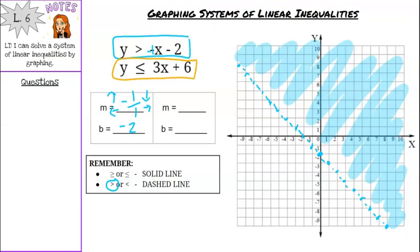We have y is less than or equal to, so I know it's going to be a solid line. The slope is 3x, so m is 3 over 1, and b is 6. Start the graph at 6 on the y-axis, then use slope 3 over 1 — go up 3, right 1. Then flip and go down 3, left 1 as many times as possible across the graph.